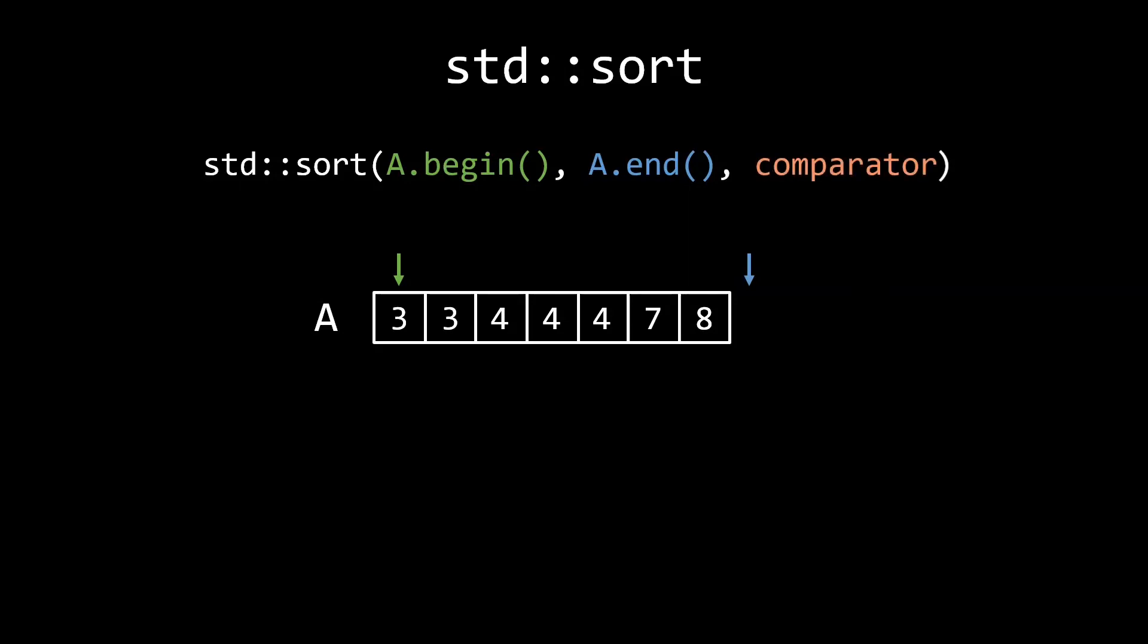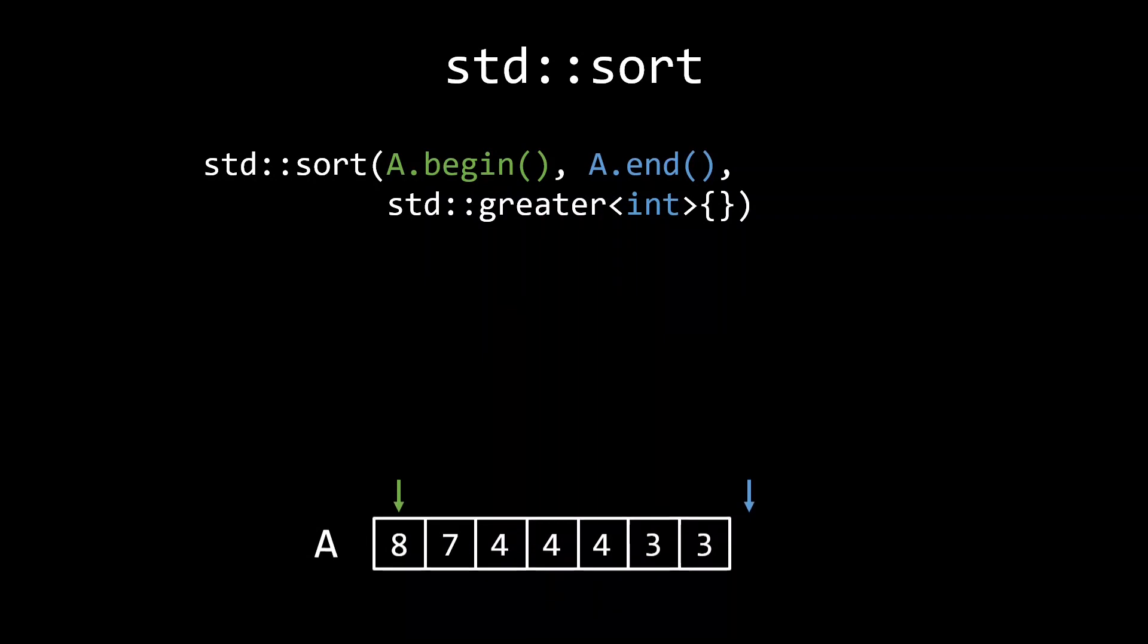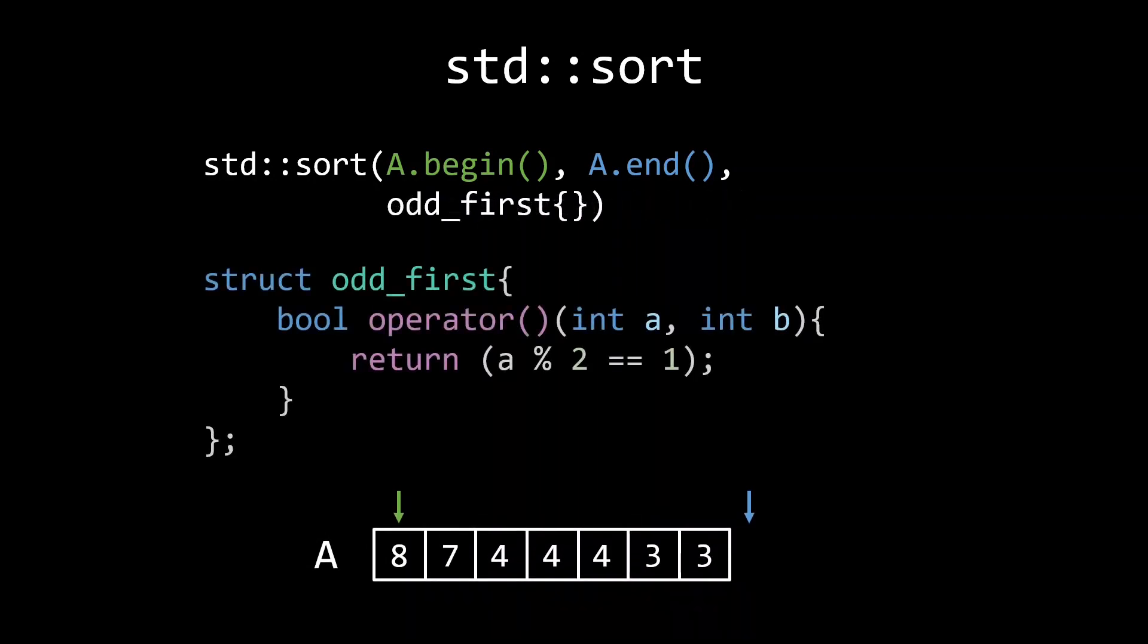To sort the elements in decreasing order, we could pass an instance of std greater. std greater is a template greater than operator, and hence needs to be instantiated with the element type, int in this case. If you need something a bit more exotic than a greater than function, you can also supply your own functor, like this strange odd first comparison operator, which simply puts all odd numbers before even numbers.